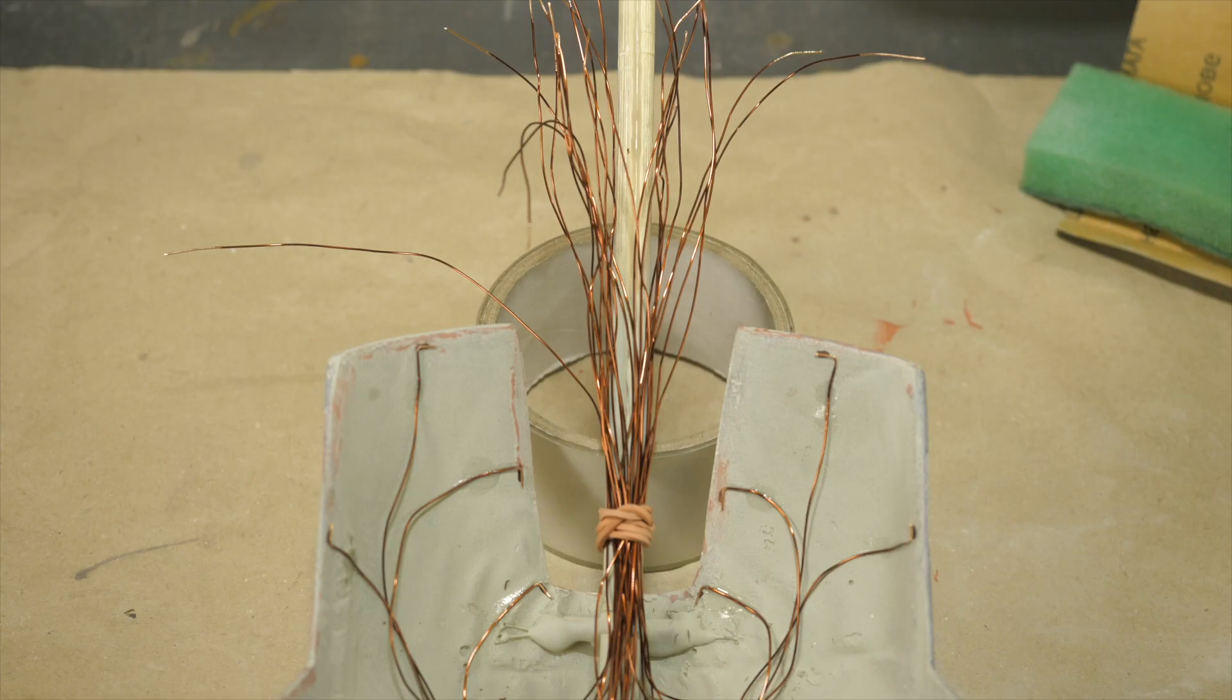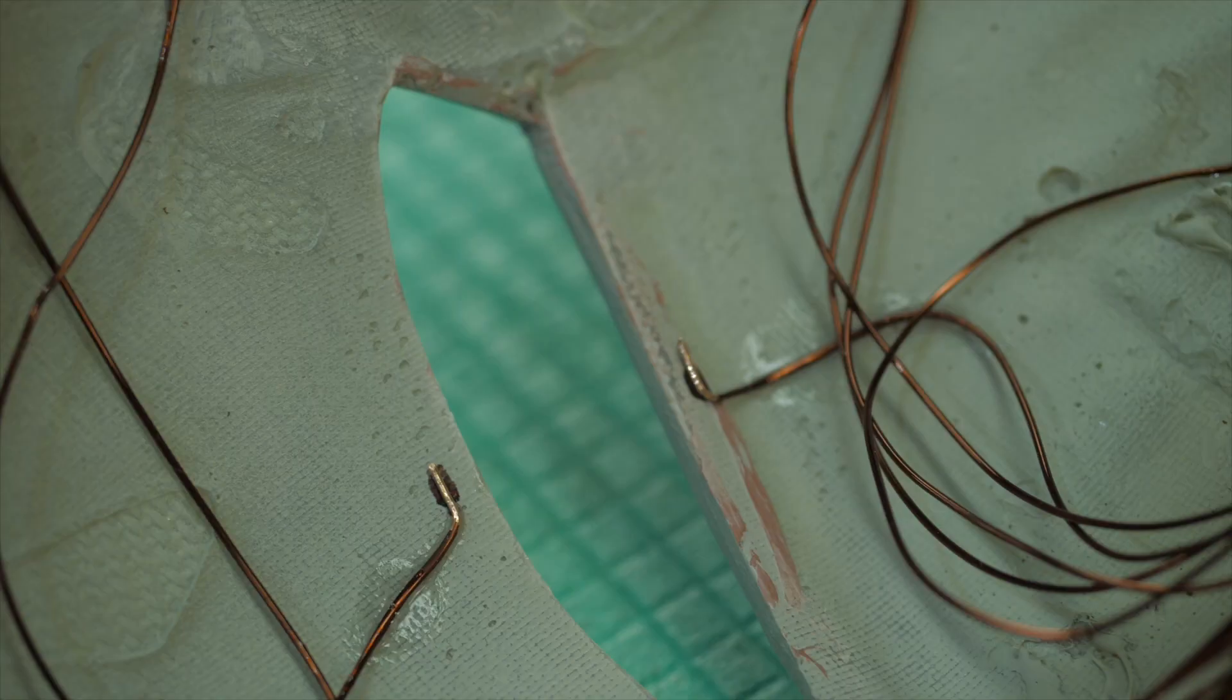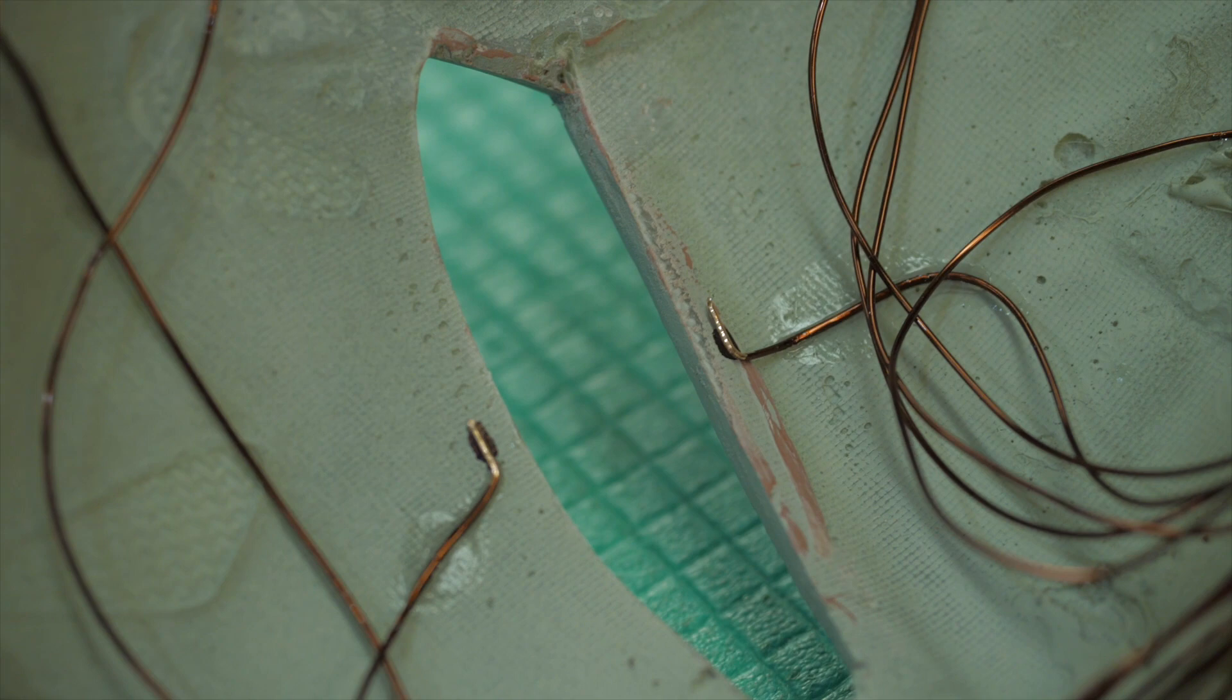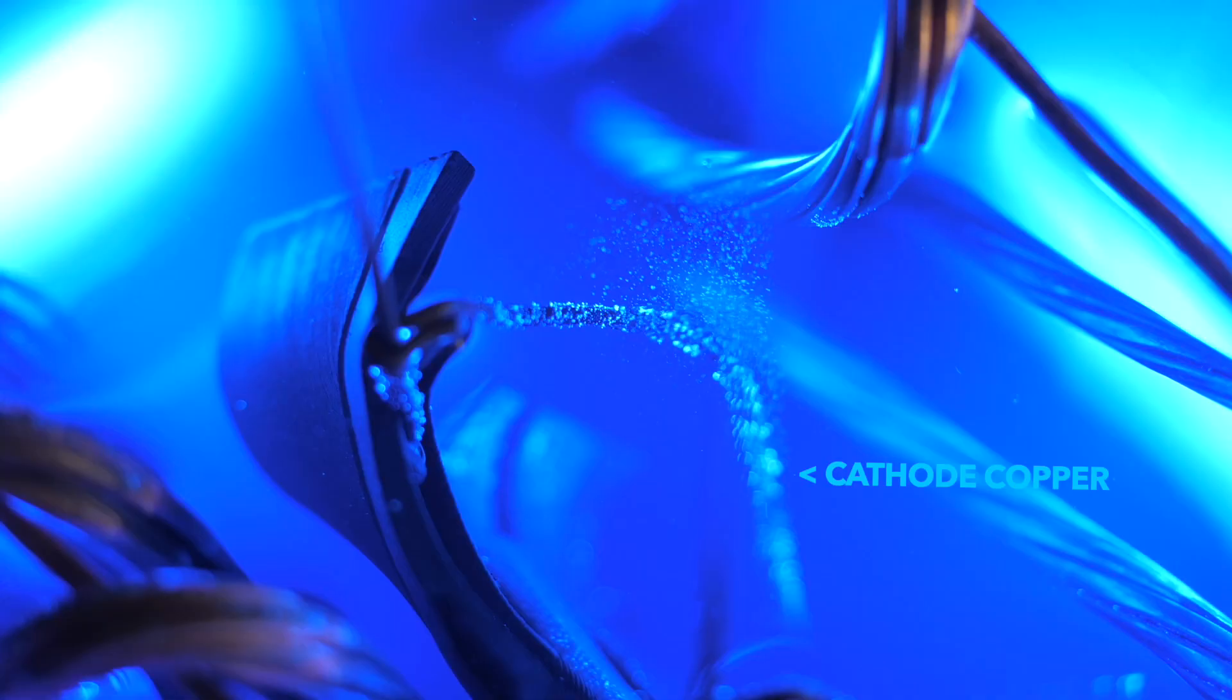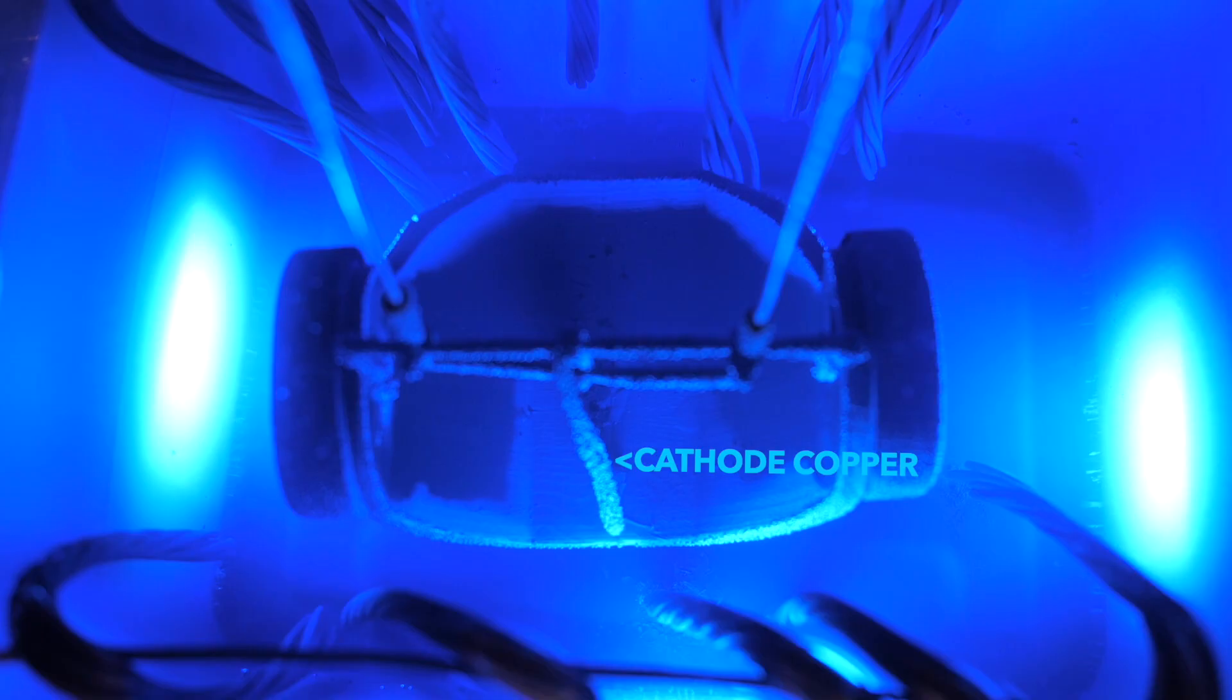We only strip 5 millimeters of insulation from each end, leaving the rest of the wire insulated, and this is very important. For a quality coating there should be no cathode copper in the electroplating bath at all, because due to the lower resistance it will pull on itself all the copper from the anodes, taking it away from the graphite surface. You can pay attention to this mistake which I made in the first electroplating video.